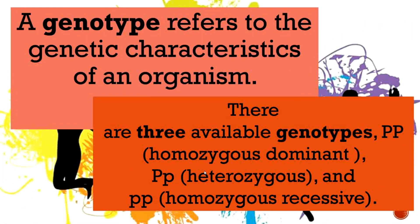Genotype refers to the genetic characteristics of an organism. There are three available genotypes. Homozygous dominant: both letters are capital because both are dominant and the same. Heterozygous: the letters are different from each other — one big letter and one small letter. Homozygous recessive: since recessive is represented by a small letter, both letters are small — for example, two small letters P. Homozygous because they are the same small letter — that is homozygous recessive.